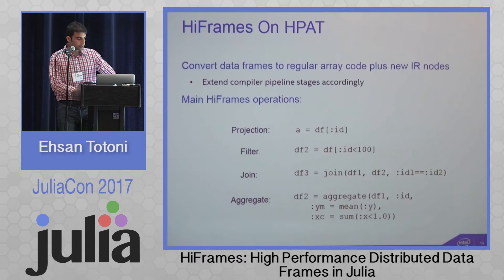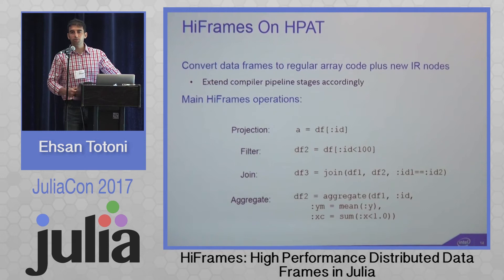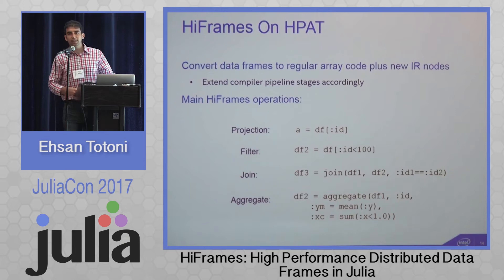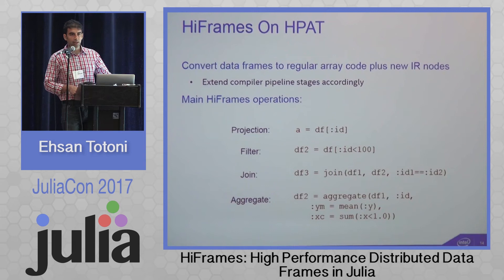To build data frames on top of HPAT, the high-level idea is to convert data frames to arrays — each column becomes an array, making us essentially a column store. We keep table metadata in the metadata section of the compiler's intermediate representation (IR), add new IR nodes for relational operations like filter, join, and aggregate, and add compiler stage extensions to handle these IR nodes.